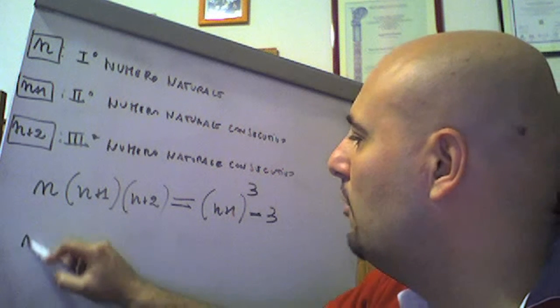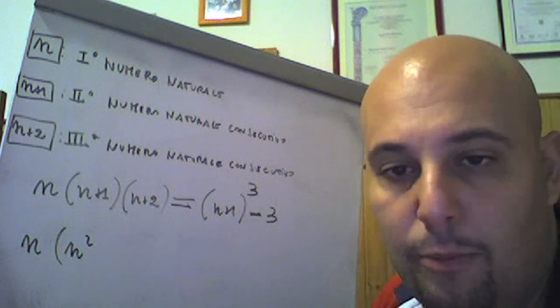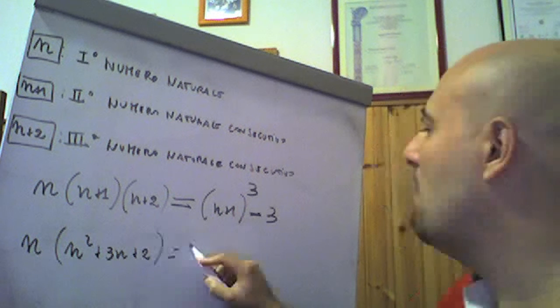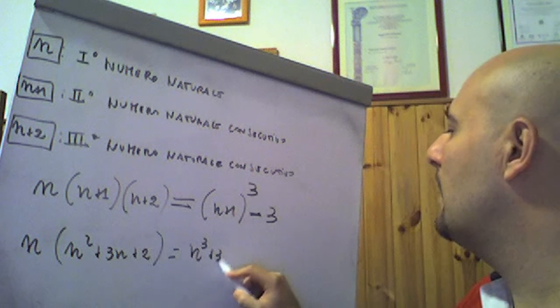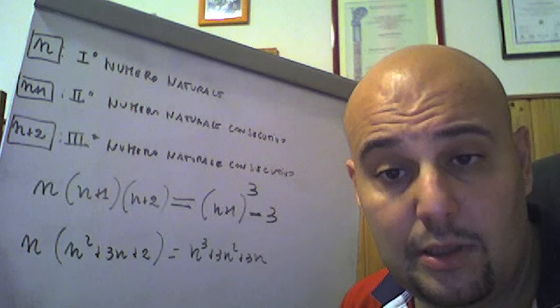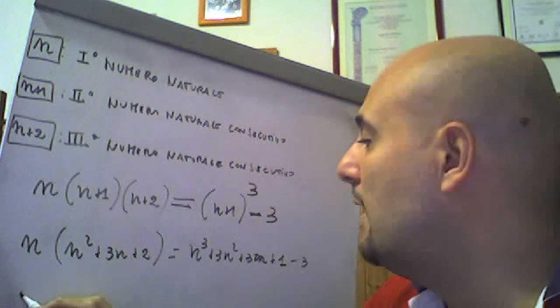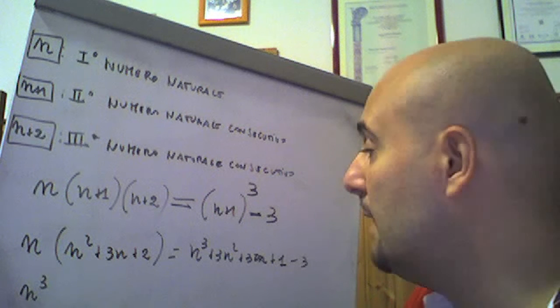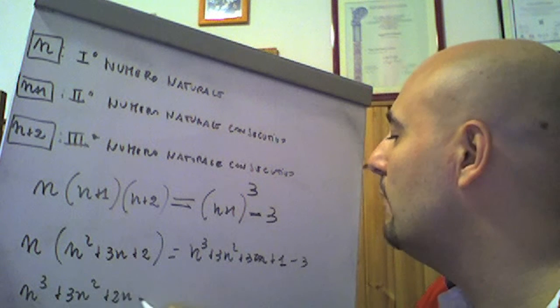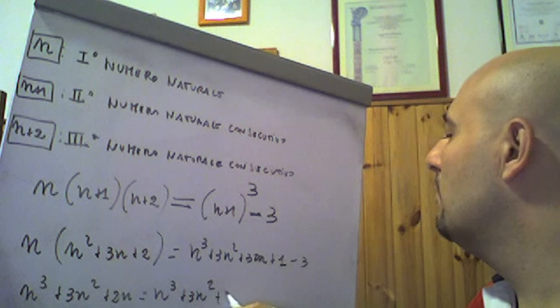n moltiplica il prodotto fra n+1 e n+2: n per n è n², n per 2 è 2n, 1 per n è n, quindi n² + 3n + 2, uguale al cubo, n³ + 3n² + 3n + 1 - 3. Ovvero n³ + 3n² + 2n uguale a n³ + 3n² + 3n - 2.